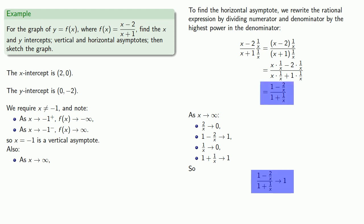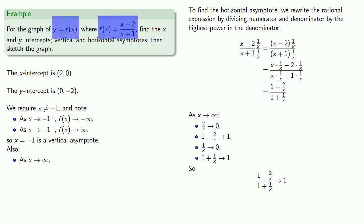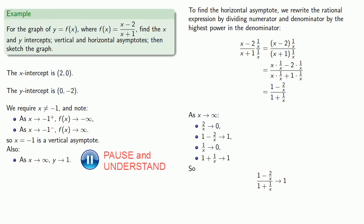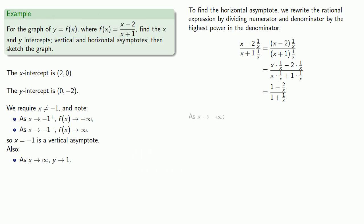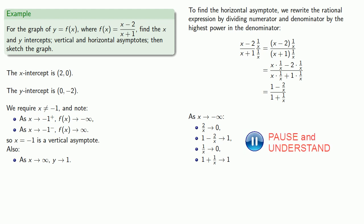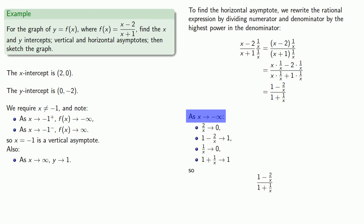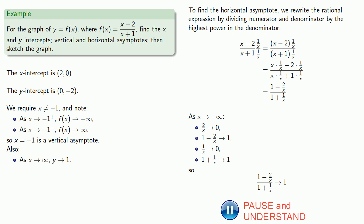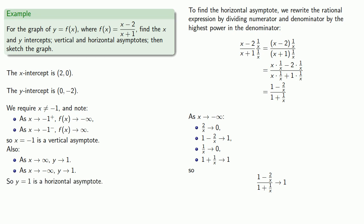Since we're on the graph of y equals f of x, that means y goes to 1. Similarly, as x goes to minus infinity, 2 over x goes to 0, 1 minus 2 over x goes to 1, 1 over x goes to 0, and 1 plus 1 over x goes to 1. So as x goes to minus infinity, our numerator goes to 1, our denominator goes to 1, and our rational expression goes to 1 over 1, or 1. As x goes to minus infinity, y goes to 1. So y equals 1 is the horizontal asymptote.